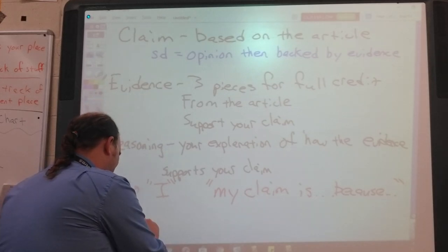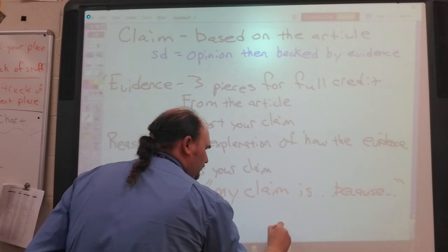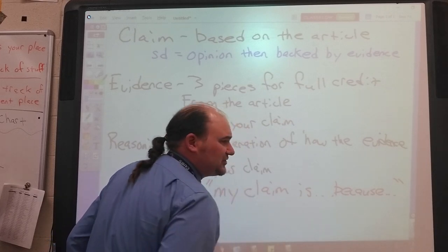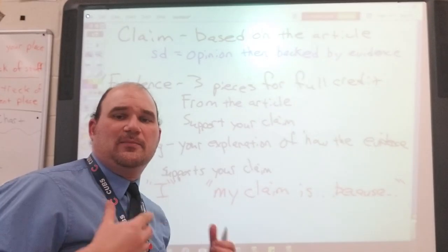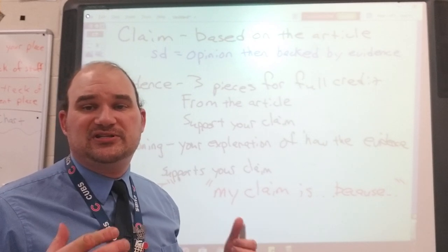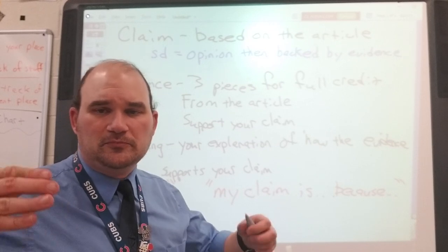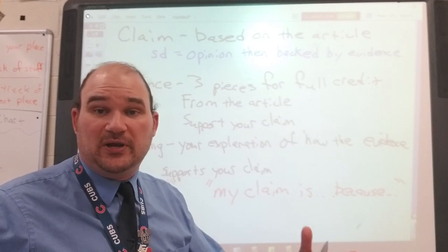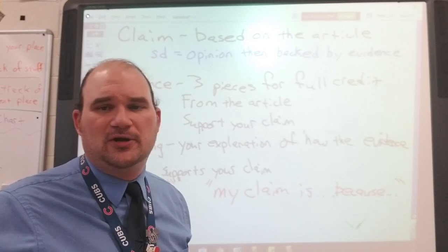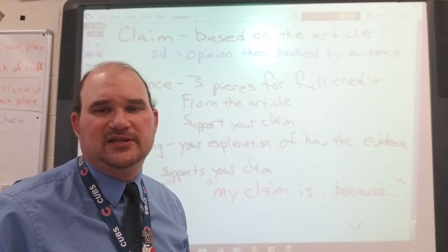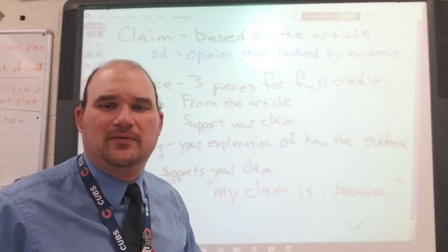Make sure to write in complete sentences. That means they need to have a subject and a verb. It needs to have a subject and a verb to be a complete sentence. The subject is going to be the noun of the sentence, and the verb is the predicate—the thing that they do. I had some people yesterday jumping straight into the verb part with no subject, especially during the evidence. You have to make sure to include all the parts or your sentence doesn't actually make sense.